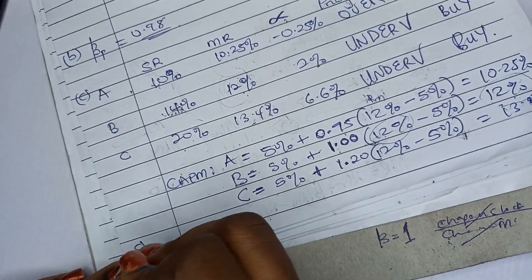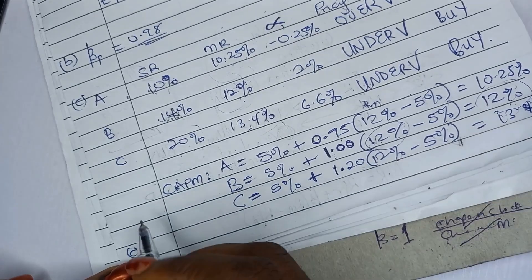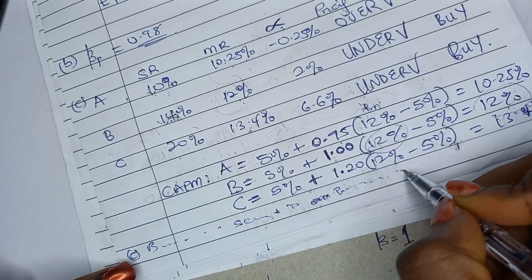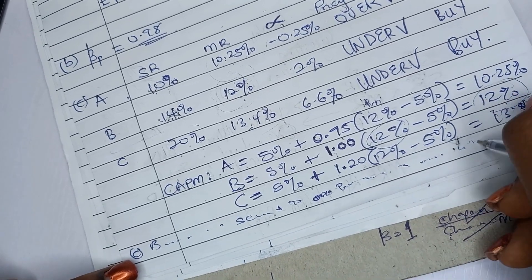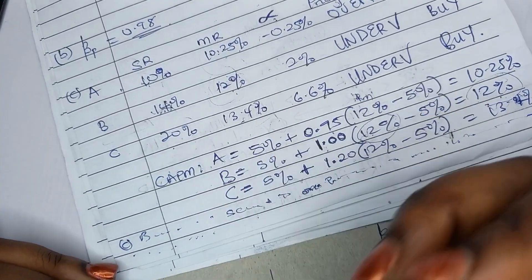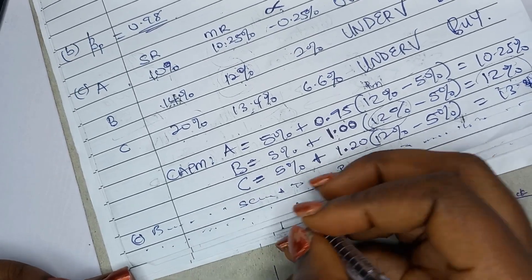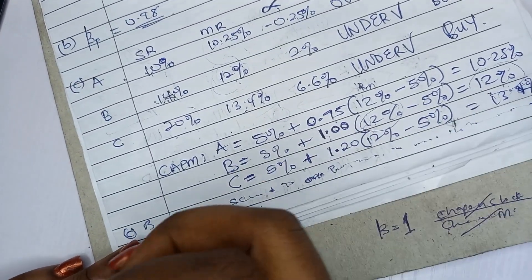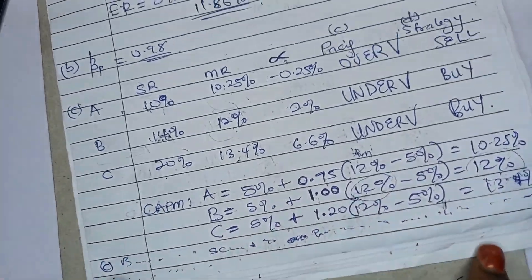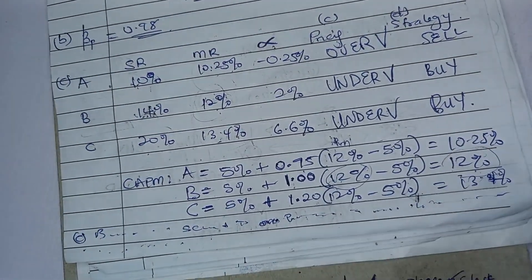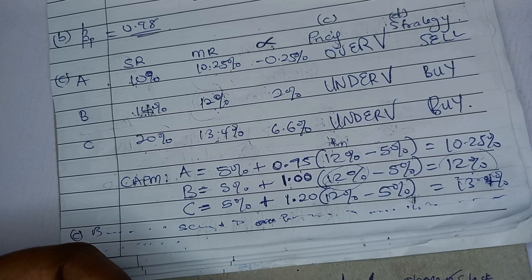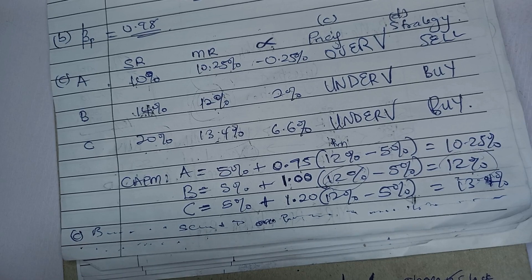To write out the answers properly: Security A is overpriced by the market because it has a return of 10% as opposed to the market prediction of 10.25%. Securities B and C are undervalued. For Part D, the strategy is: security A — sell; security B — buy; security C — buy. If you study past questions, you can pass portfolio comfortably.